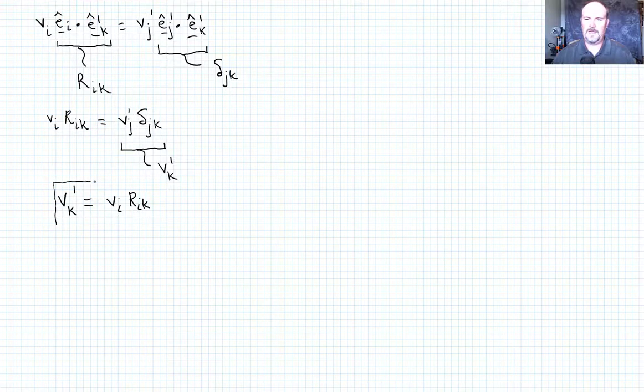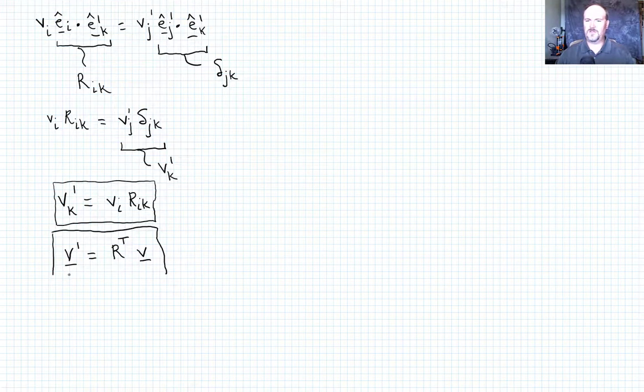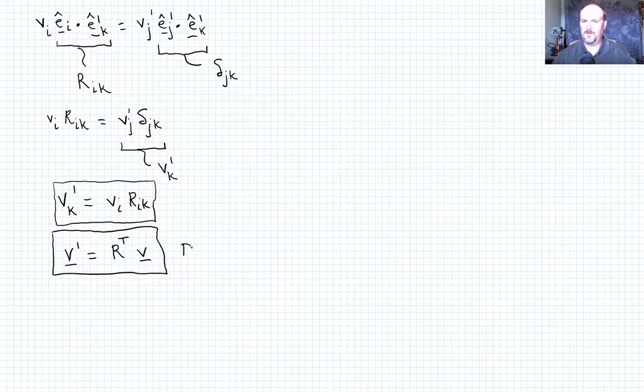So that's given in sort of index form. If we wanted to write that in direct form, we could write that that says v prime is equal to R transpose times v. Okay, so that would be, and remember, this is just talking about how the components transform. Okay, so this would be how we would write it in direct notation. This would be how we would write it in index notation.